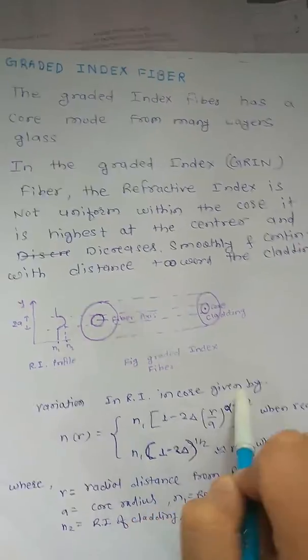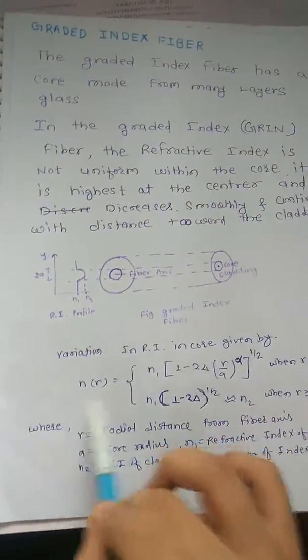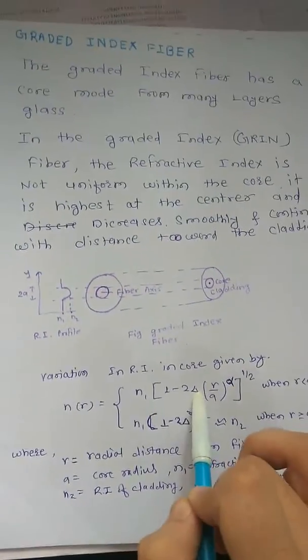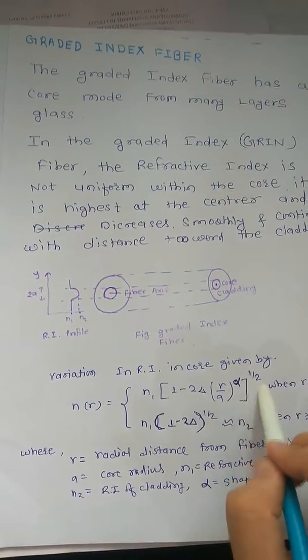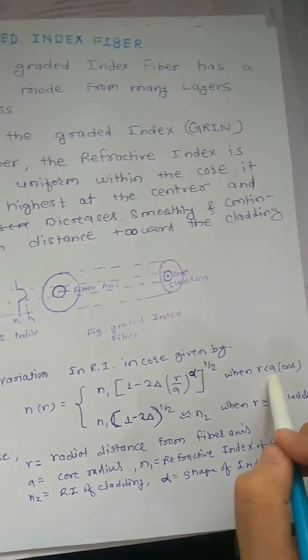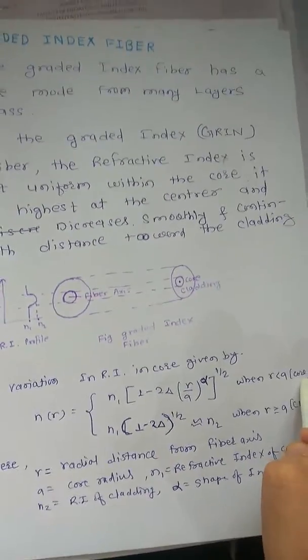Variation in refractive index in core given by this formula: n(r) = n1[1 - 2Δ(r/a)^α]^(1/2), when r is less than a. That is, core refractive index is less than a.